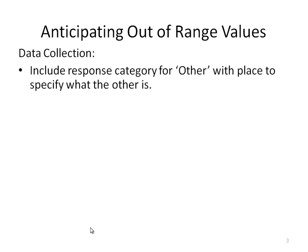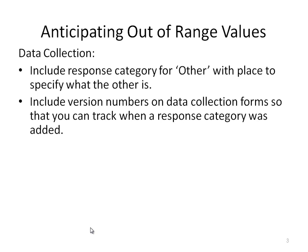We want to anticipate that there will be out-of-range values, just like with missing data. In data collection, we want to include a response category of 'other' with a place to specify what 'other' is. If you're not sure that all your categorical responses capture all possible answers, include 'other' and a write-in field. It's very helpful to include version numbers on your data collection forms so you can track when a response category was added.